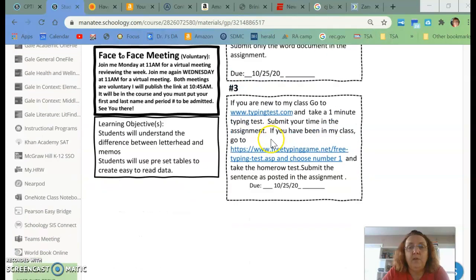And then assignment three is if you are new to my class, you need to go to typing test and take the typing test and send me your speed so that I can send you a goal for second semester. If you have been in my class, I need you to go to this one and you need to take only test number one. Test number one is about the home row and we've already done stuff about the home row. So hopefully it will make sense to you. And then you have to submit a sentence that is located inside the assignment.